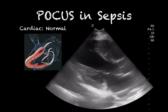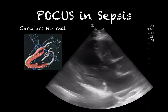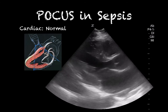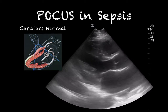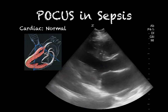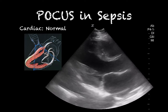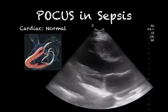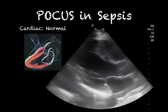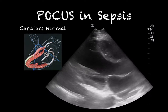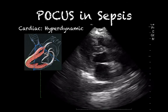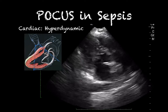Let's talk about point-of-care ultrasound (POCUS) in sepsis. Sepsis affects cardiac function, and we can use ultrasound to quickly identify some of these changes. Here we see a normal heart in the parasternal long view — it has a normal rate, the mitral valve opens and slaps the septum indicating a good left ventricular ejection fraction, and you can see the ventricles contract during systole. The left ventricular walls don't touch.